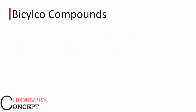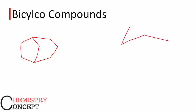First of all, what are bicyclo compounds? Let me draw a bicyclo compound here for you. What is special in this organic compound is that there are two different rings fused together. So these are called bicyclo compounds. Let me draw one more so we can understand it properly — one ring and then another ring, two rings fused together.